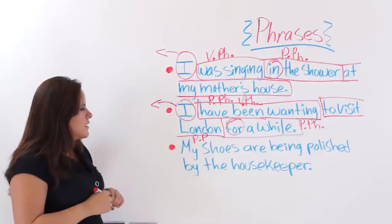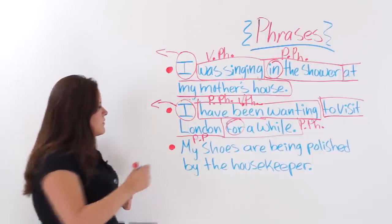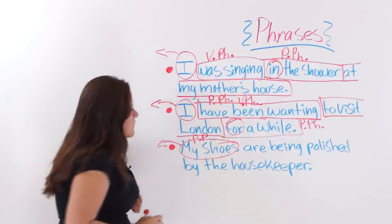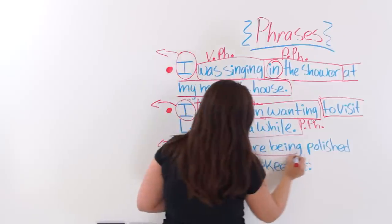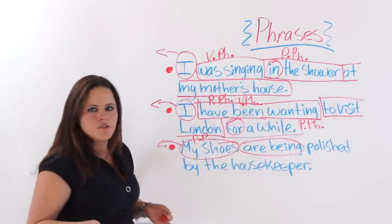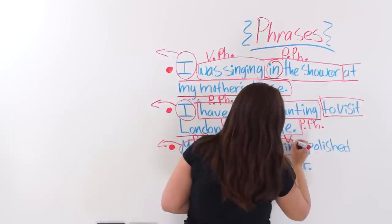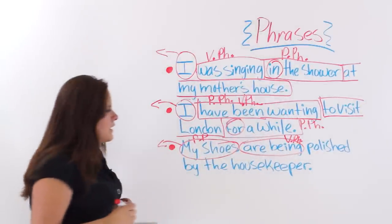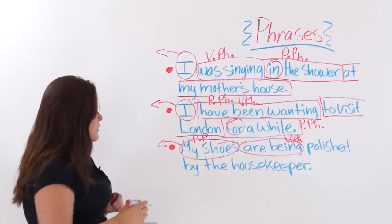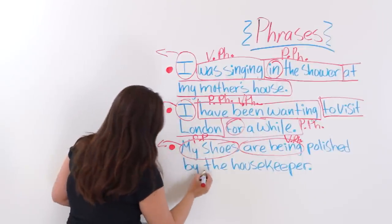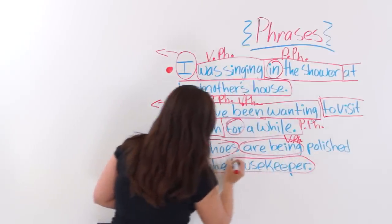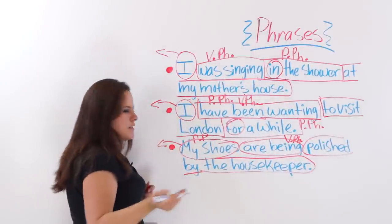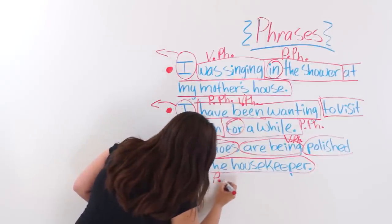The last one says: my shoes are being polished by the housekeeper. We are going to take out the subject 'my shoes'. 'Are being' would be the first phrase, which is a verb phrase. 'Polished by the housekeeper' — we have the preposition 'by', so 'by the housekeeper' would be a prepositional phrase.